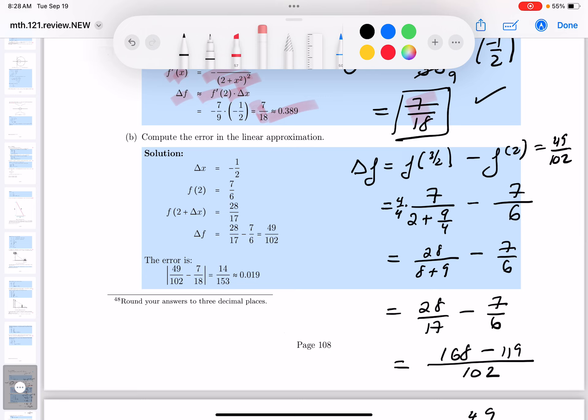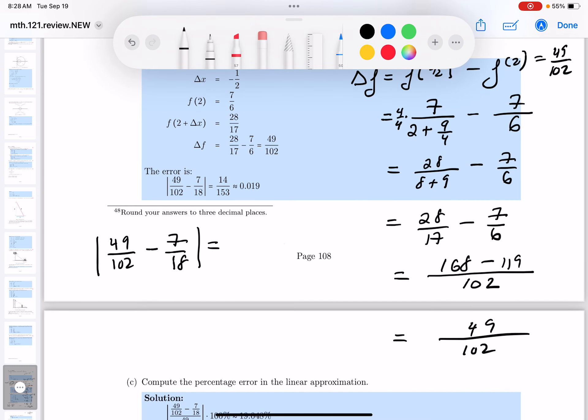So let's compute the error in the linear approximation. So the error for the linear approximation, it's going to be the difference between the two. But we don't care the direction in which it occurs. So it's going to be the absolute value. So I'm going to put 49 over 102, this is the exact value, minus 7 18ths. Things are getting pretty nasty over here.